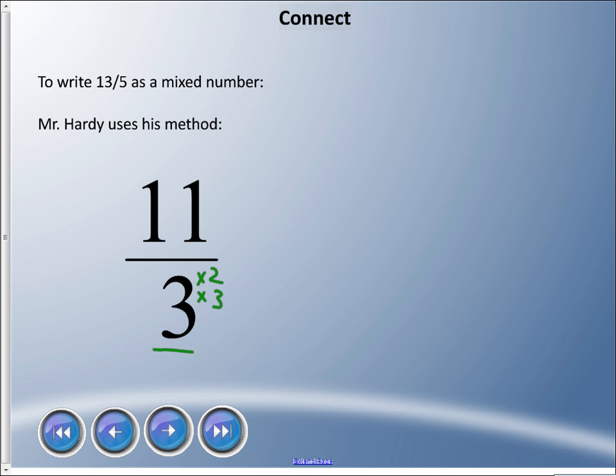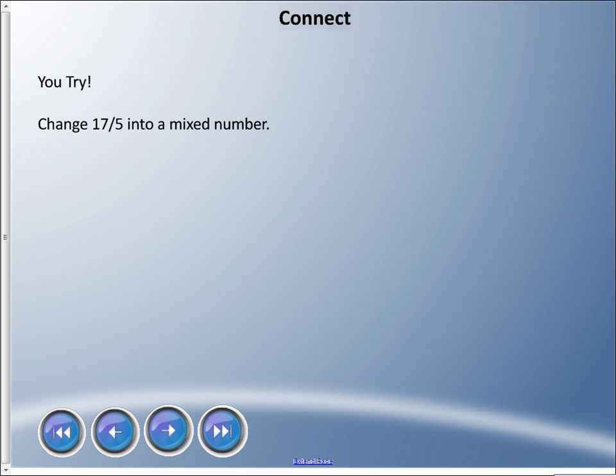I'm gonna get you guys to try this one. I want you to change seventeen fifths—I'll write that a little bit easier for you: seventeen fifths—and I want you to change it into a mixed number. It means there's a whole number and we have a numerator and a denominator here. Maybe I'll just put some boxes here. You try that out.